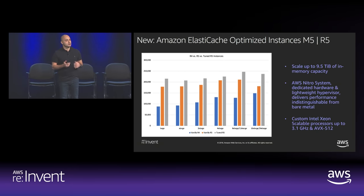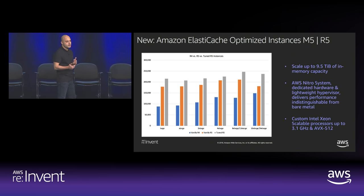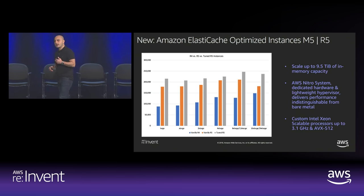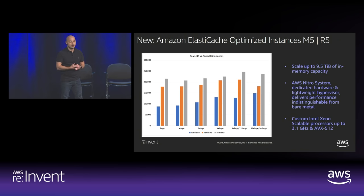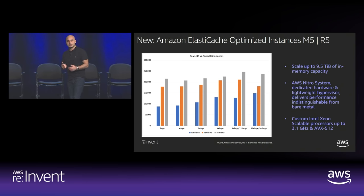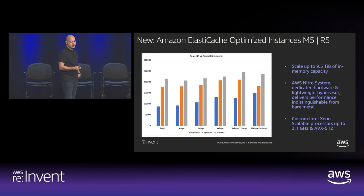If you remember last year we talked a lot about the R4s — well, now M5s and R5s are out with much greater performance over the previous generation in terms of CPU. On top of that, we've added additional optimizations on those instance types specifically for ElastiCache. Comparing the previous-gen R4s to the optimized M5/R5s on ElastiCache, you can see 144% additional throughput, which is massive.